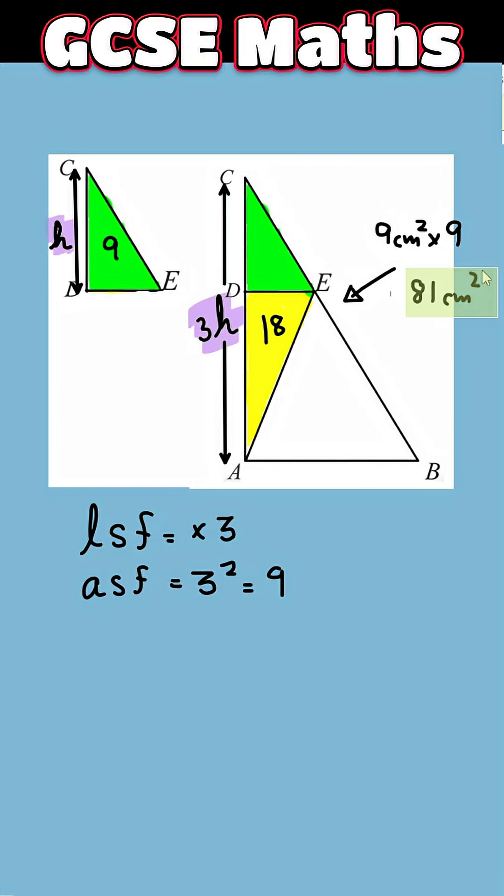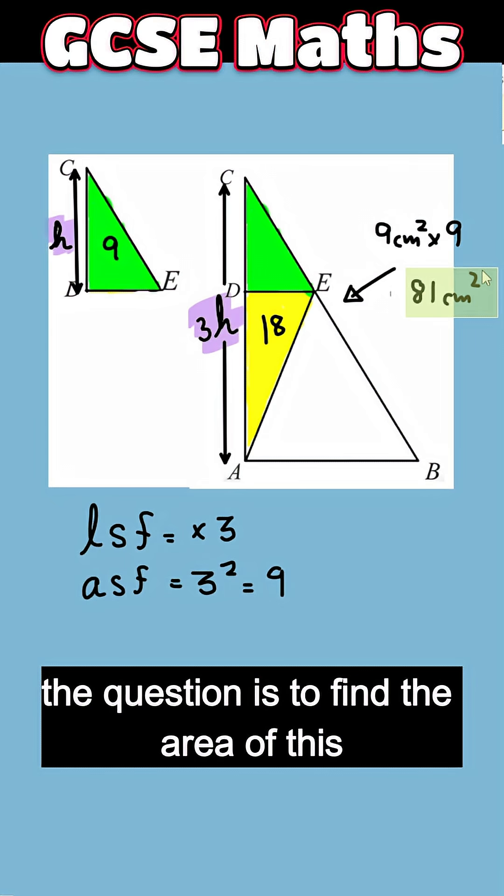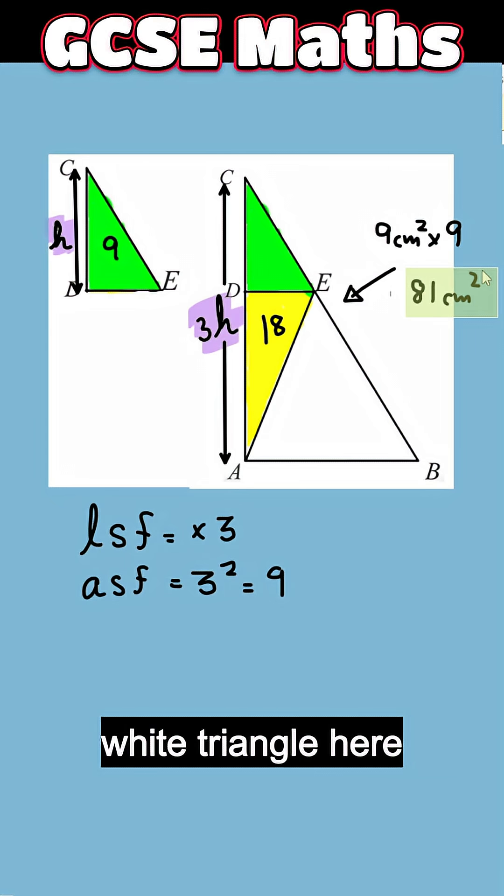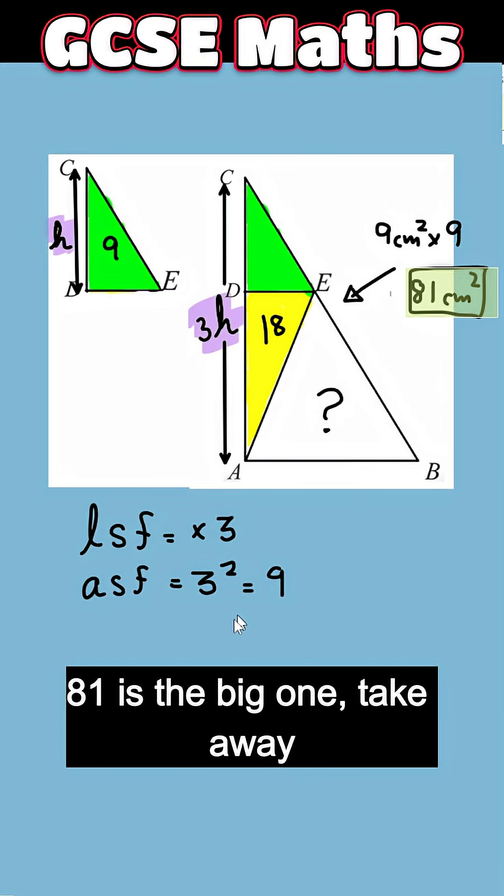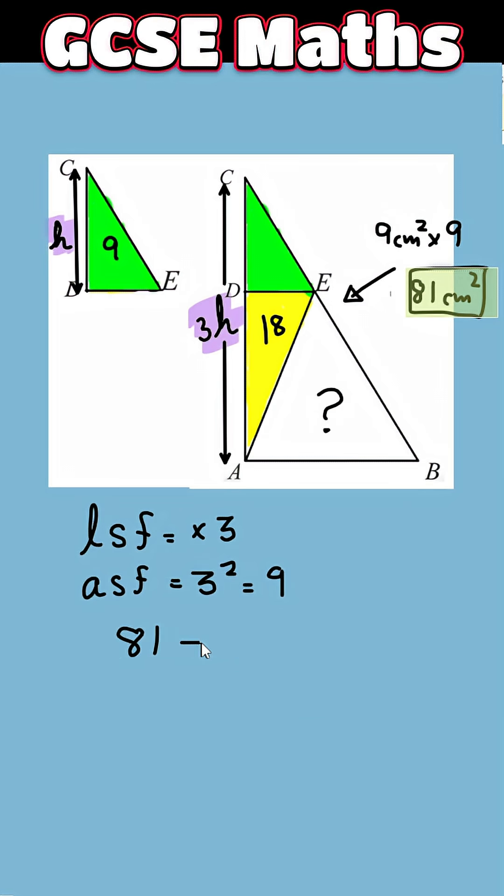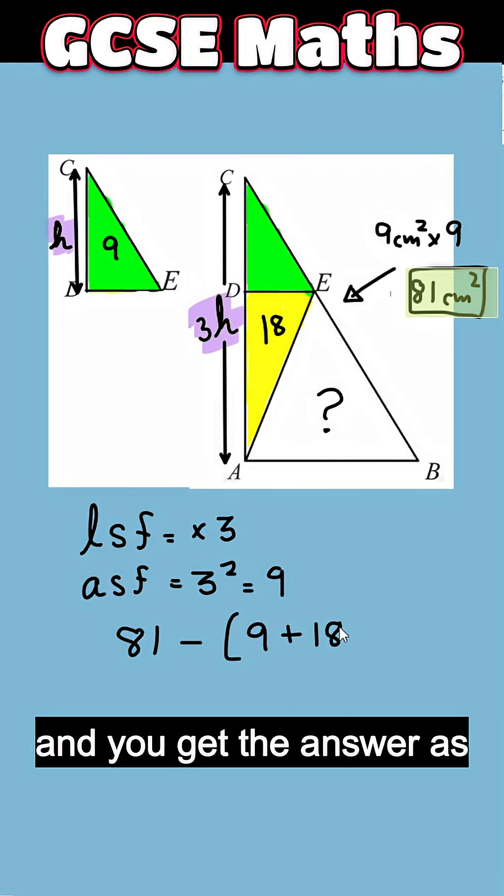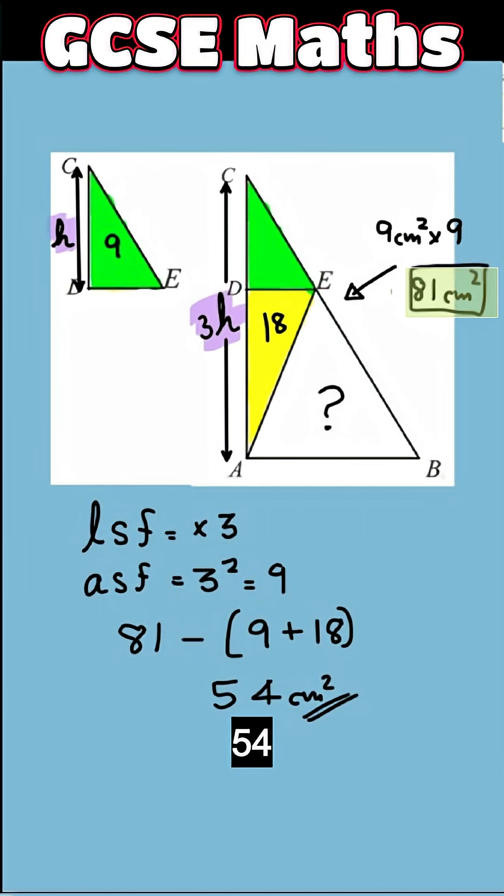Now, the question is to find the area of this white triangle here which is very easy. 81 is the big one, take away the green one is 9, the yellow one is 18, and you get the answer as 54 centimeter square.